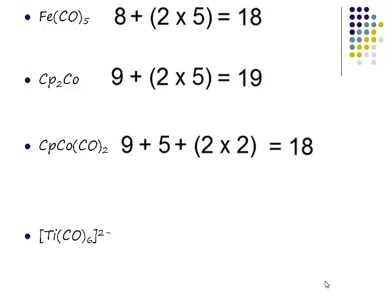And finally, we've got titanium. What group is titanium in? Four. CO, how many electrons does CO donate? And what else do I need to include? The charge. So if it's two minus, what do I need to do to my count? You need to add two to the count. And if we add that lot together, what do we get? 18.